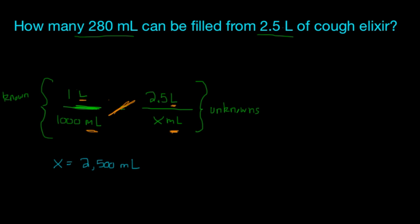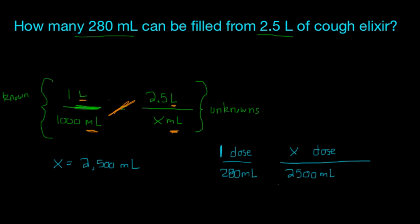We know that 2.5 liters has 2,500 milliliters in it, and because we are dealing with milliliters, we are dealing with the same units. One dose is 280 milliliters, and we want to know how many times we can get a dose from 2,500 milliliters. Now x is going on the top, and the units are both on the same side still. We cross multiply and divide: 1 times 2,500, divide it by 280, and that gives us x equals 8.9 doses. So how many 280 milliliters can be filled from 2.5 liters of cough syrup? The answer is 8.9 doses.